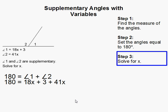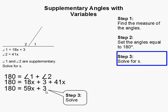Then the next step is simply to solve for x. So in this step I combine like terms. I combine the 18x and 41x and get 59x. Then I subtracted 3 from both sides. 177 equals 59x. And divide both sides by 59 and you get x equal to 3.